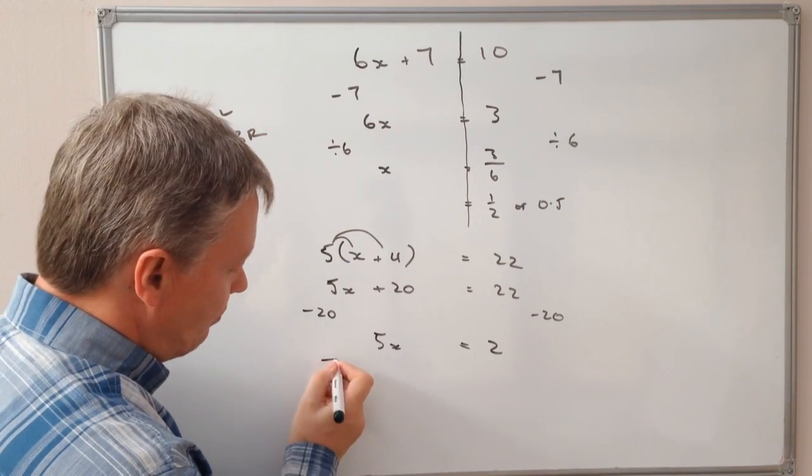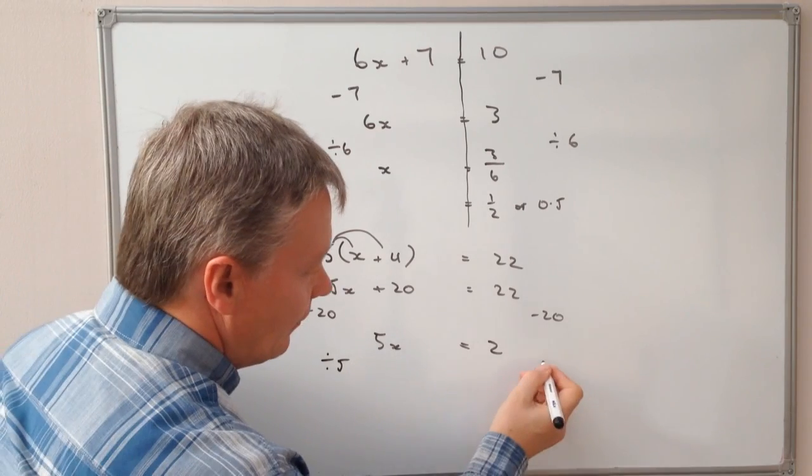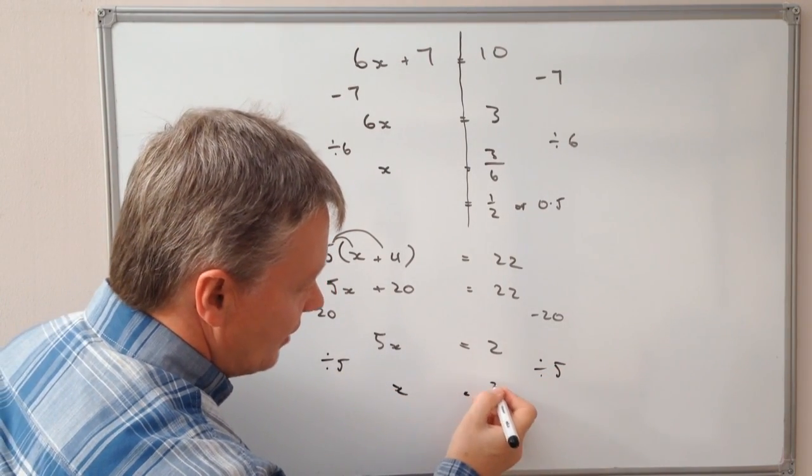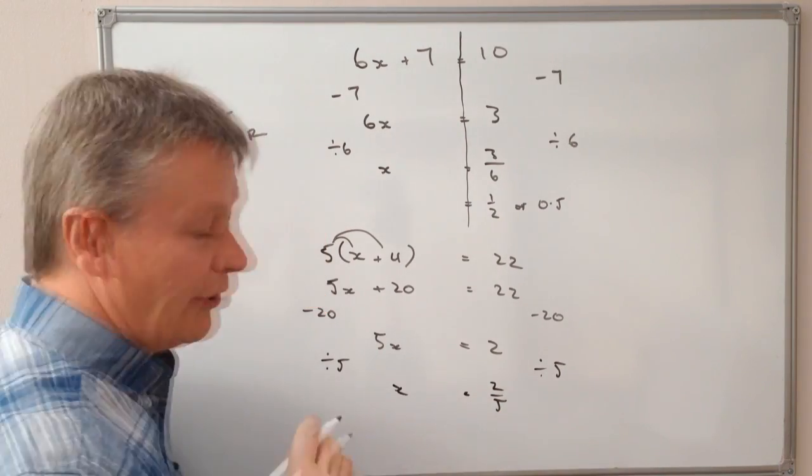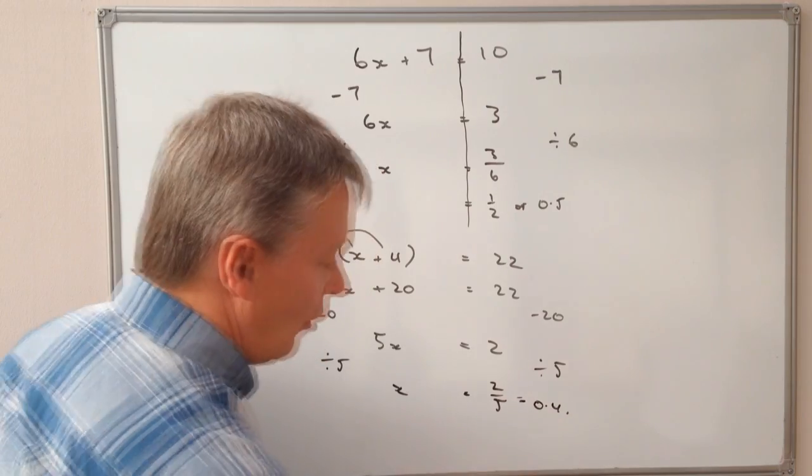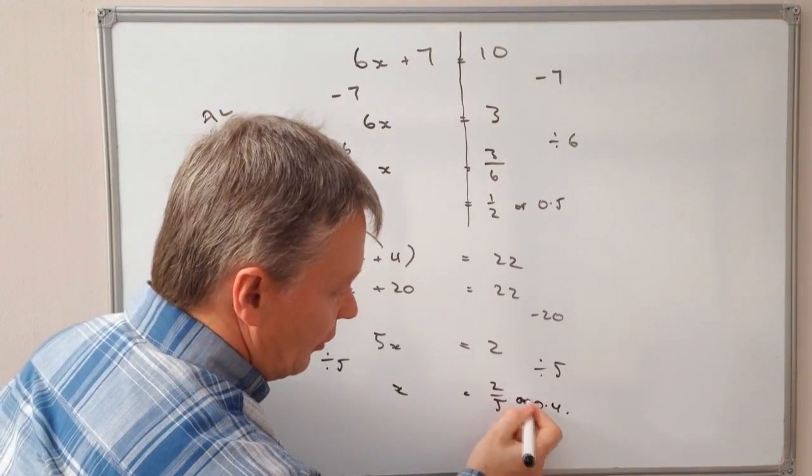On this side, I'm going to divide both sides by 5. So I get x here, and on this side, I get 2 over 5. And if you prefer, that's a decimal equivalent of 0.4.